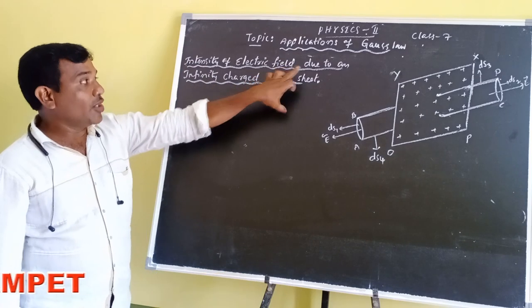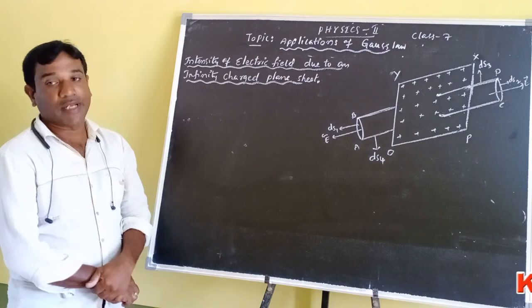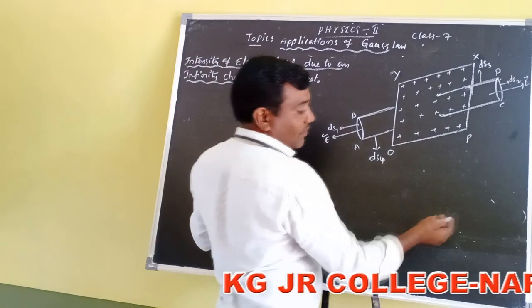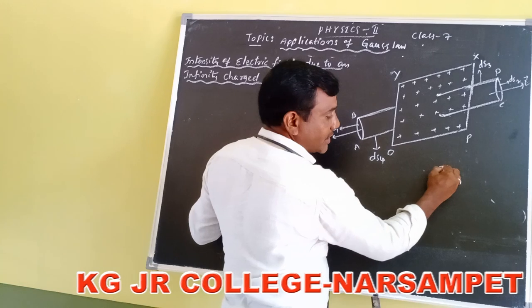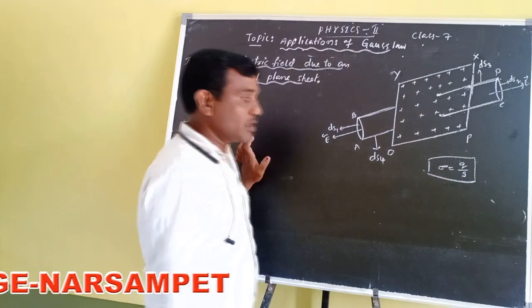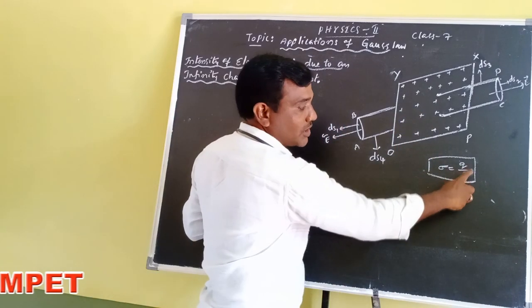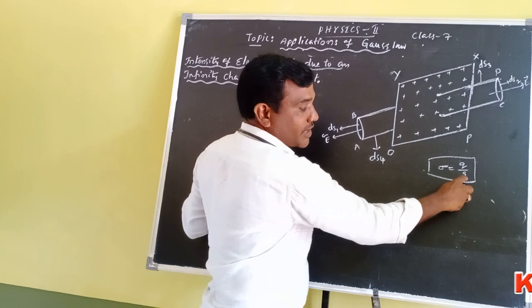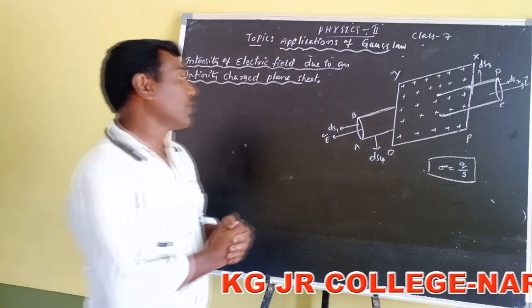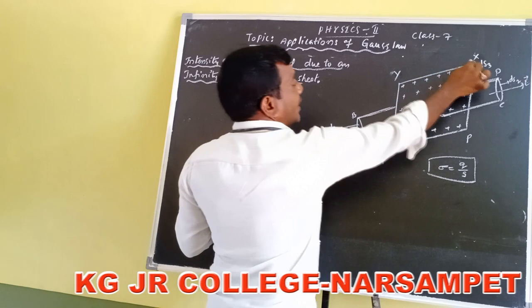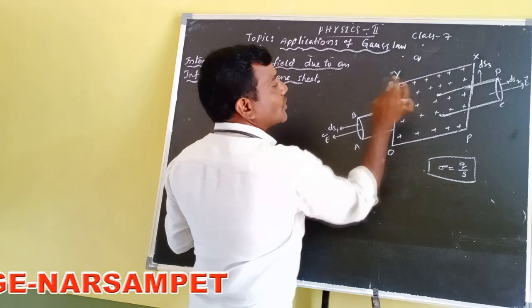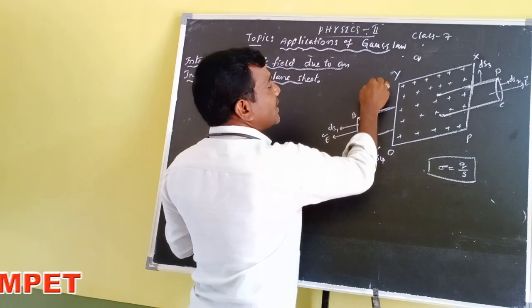We have already discussed surface charge density. Sigma is equal to Q divided by S, where Q is the charge and S is the surface area. The charge per unit surface area is known as surface charge density: σ = Q/S. Now, consider an infinite charged plane sheet O-P-X-Y with positive charge Q and surface charge density sigma.